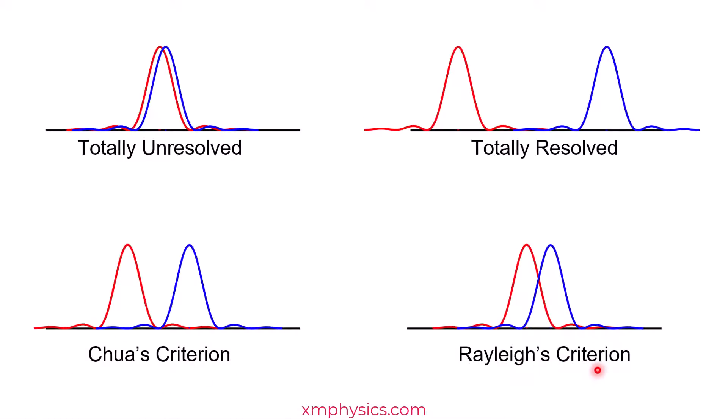So there's this Rayleigh's criterion which says that the two images are just resolvable if one guy's first minimum coincides with the other guy's peak. So you realize these two are actually the single slit diffraction patterns.